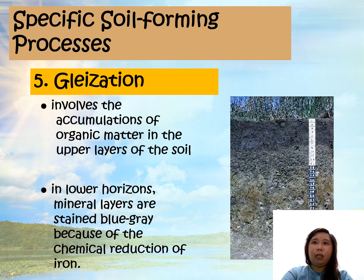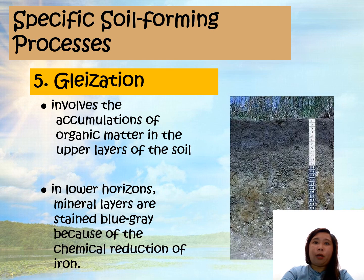As you can see, the upper layers of the soil have a relatively darker color because of the accumulation of organic matter. Because of the chemical reduction of iron, you can see that the lower horizons have a color of blue-gray.